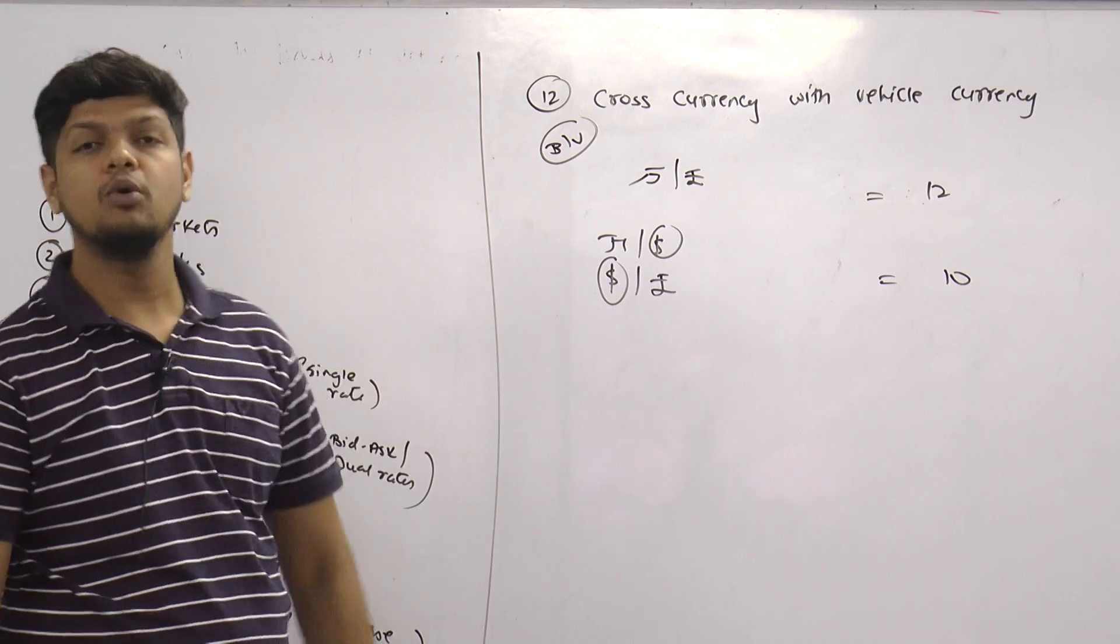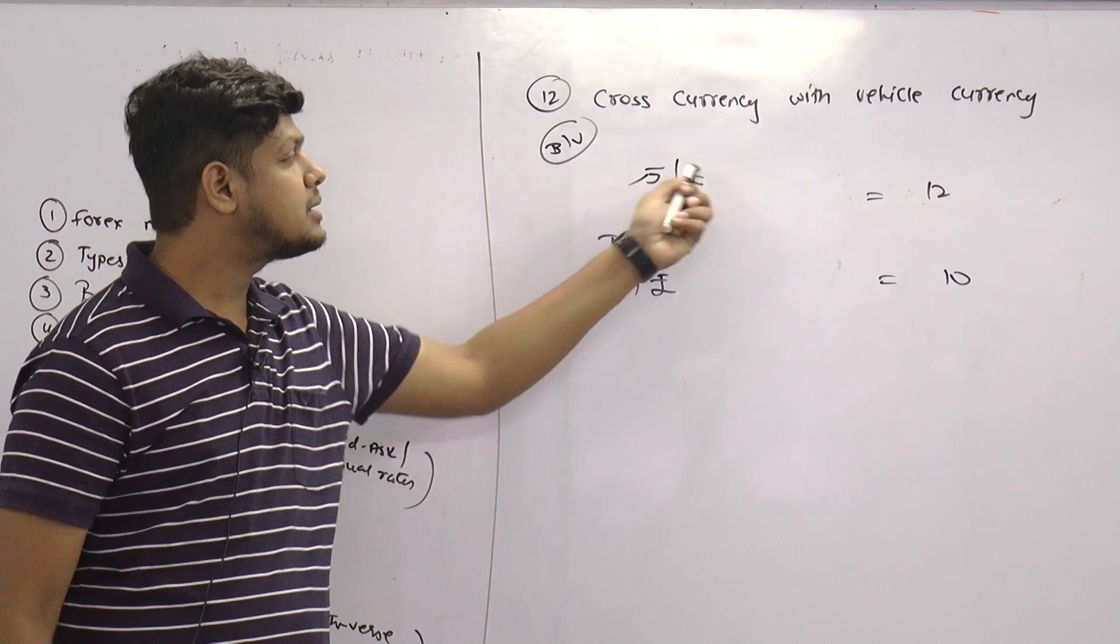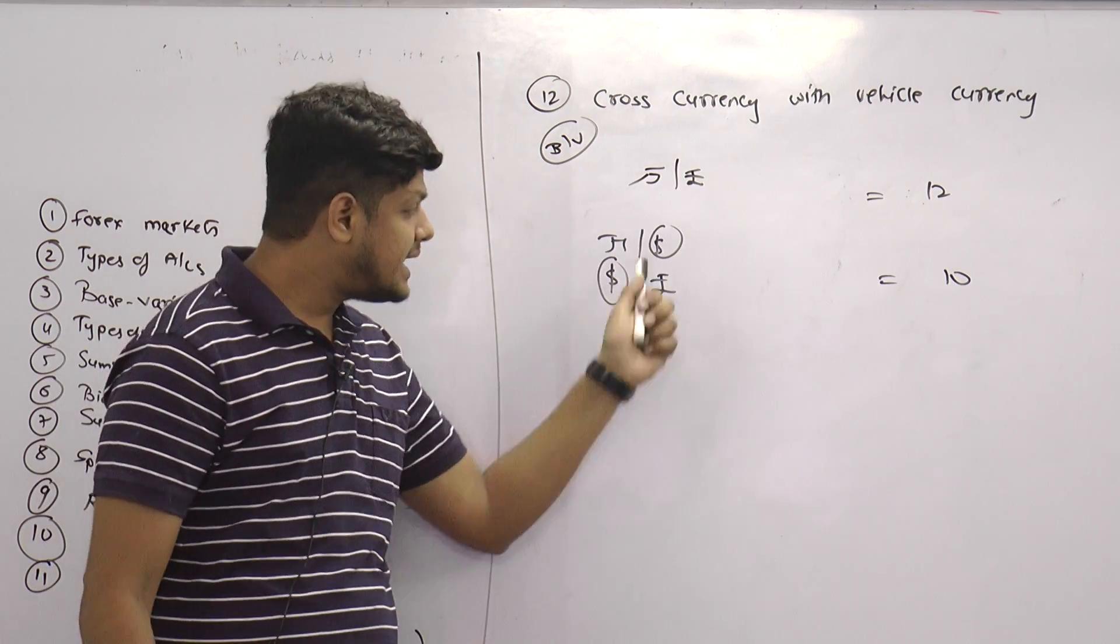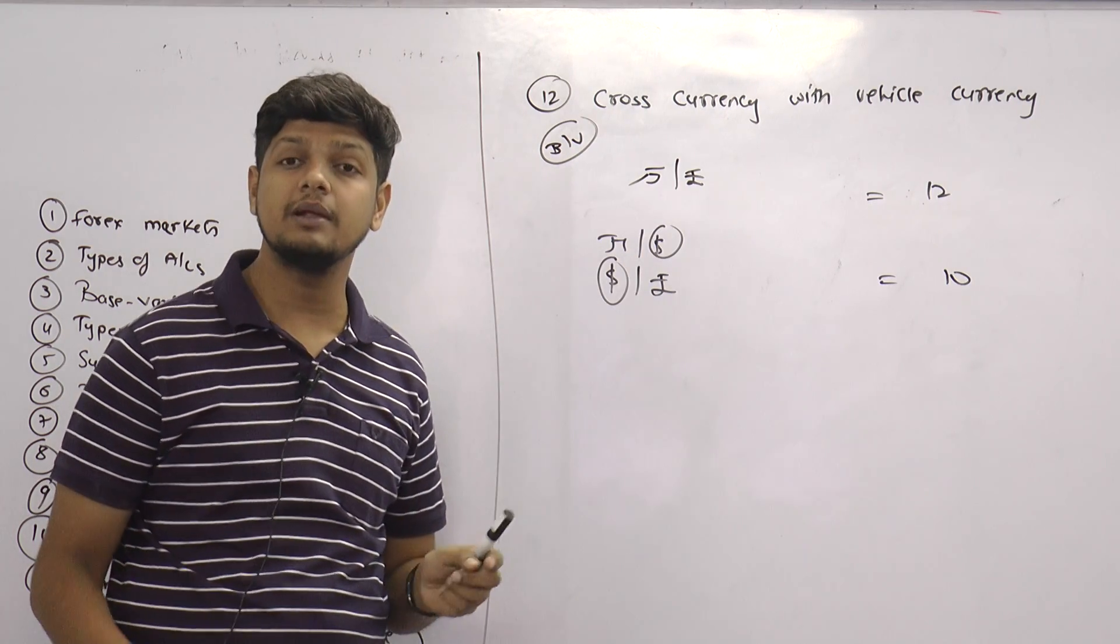Why? Because dollar is more frequently traded than both directly traded. So the direct flight costs me more than the indirect flight which is more tradable. Yuan-Dollar is more tradable, Dollar-Rupee is more tradable.